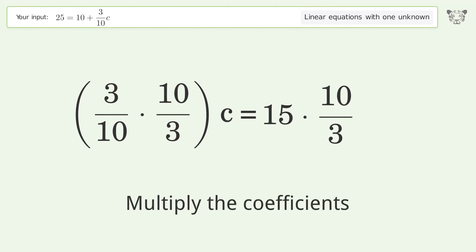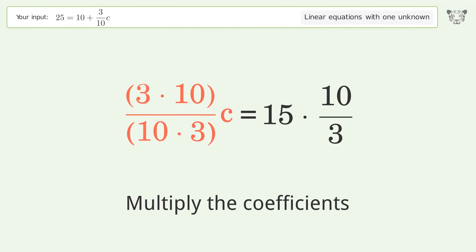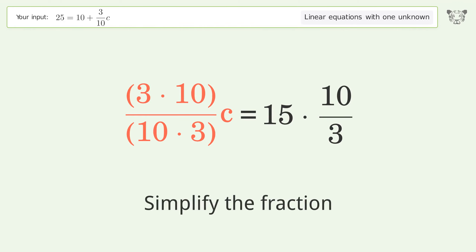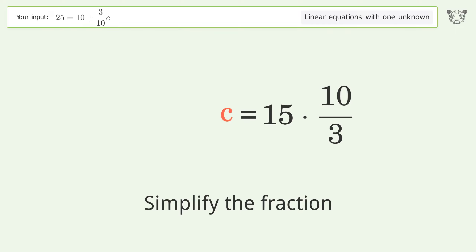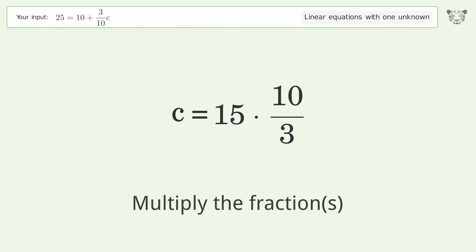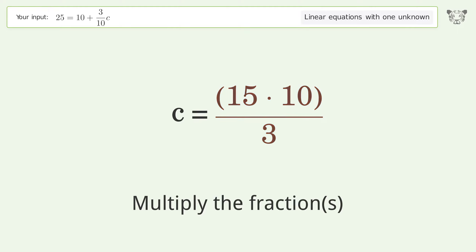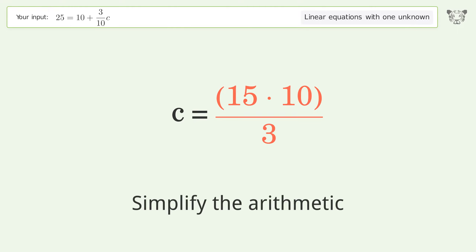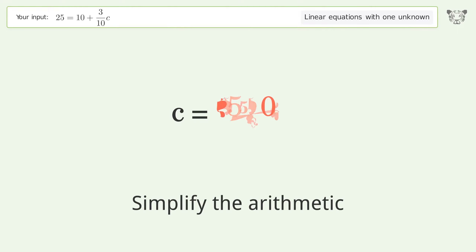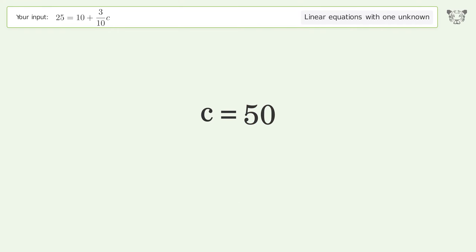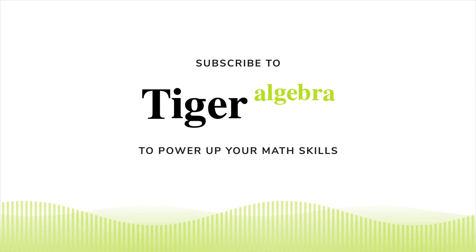Multiply the coefficients, then simplify the fraction. Multiply the fractions and simplify the arithmetic. The final result is c equals 50.